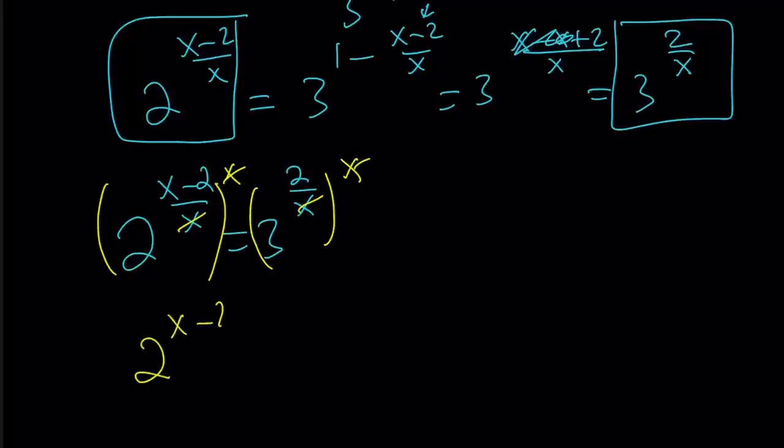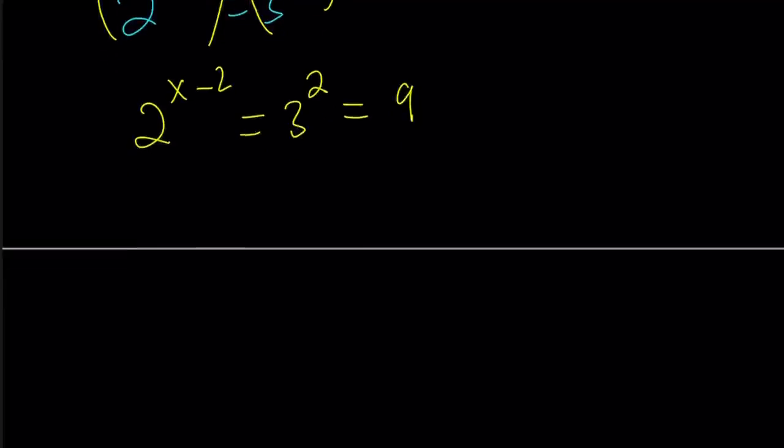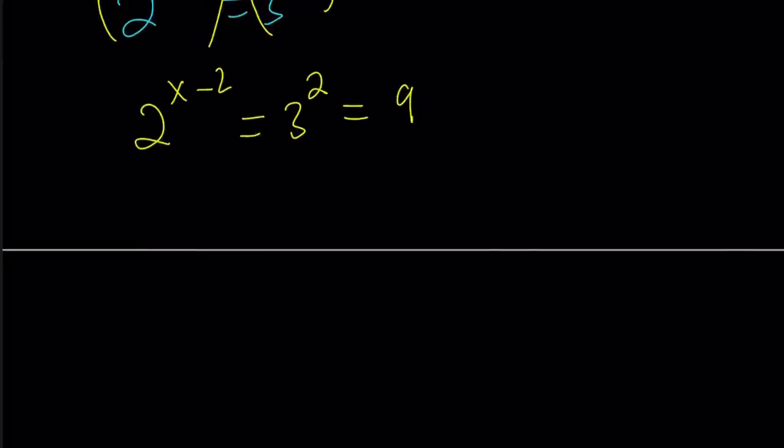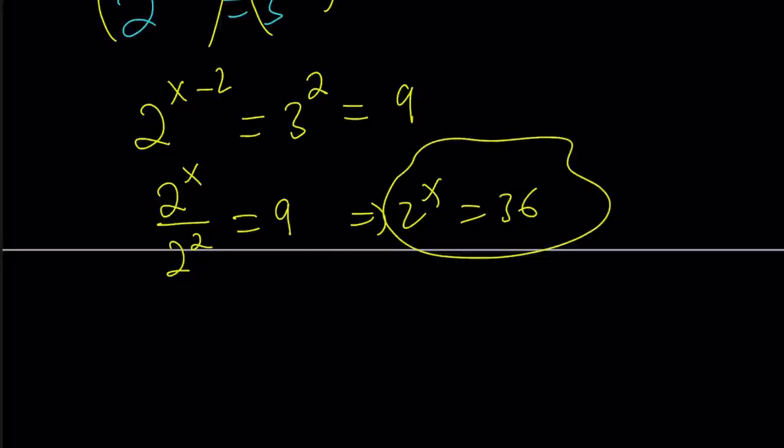2 to the power x minus 2 equals 3 to the power 2, which is 9. Awesome. What am I looking for? I'm looking for 2 to the power x. So this means 2 to the power x divided by 2 to the power 2 is 9. This means 2 to the power x equals 4 times 9, which is 36. And that's the answer.